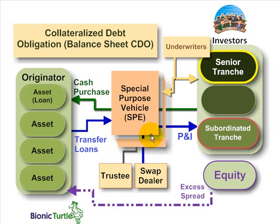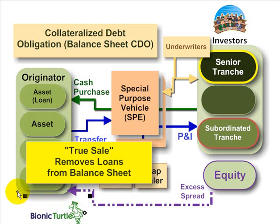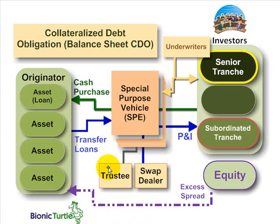So a special purpose vehicle or entity is created, and the loans are sold from the bank to the special purpose entity. A key part of the CDO that makes it meaningful is that it meets a set of qualifying criteria called a clean break that constitute the true sale of the loans away from the originator and to the special purpose entity. The sale must meet these criteria in order for the bank, the originator, to remove those loans from its balance sheet. The bank may also deposit a cash collateral account.